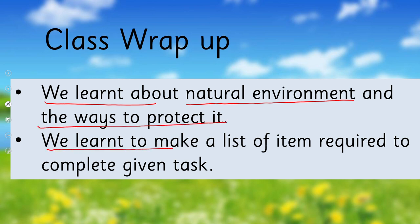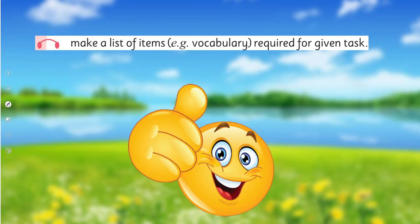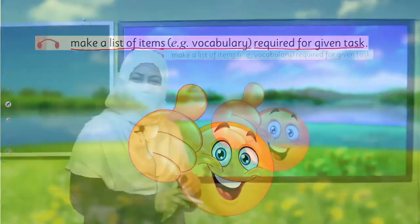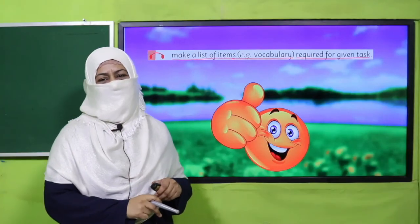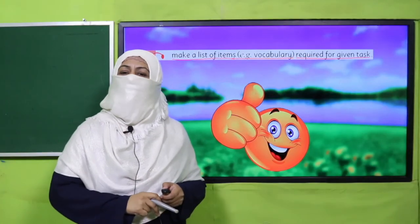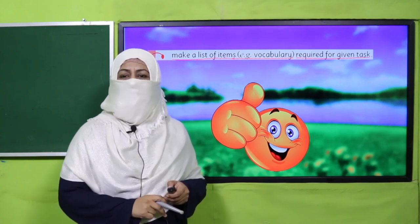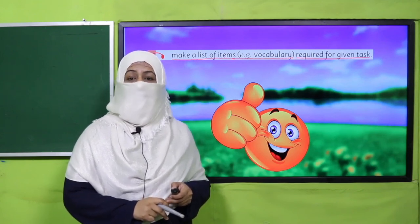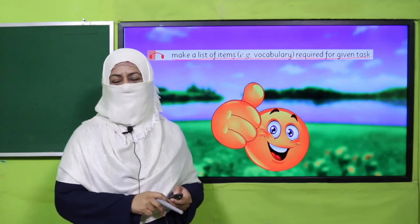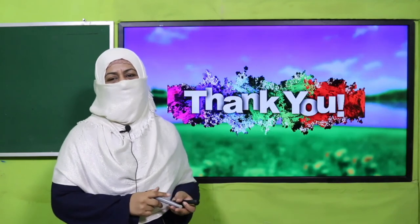So what have we learned today? We learned about natural environment and the ways to protect it. We learned to make a list of items required to complete a given task. In this way we achieved our SLO: to make a list of items required for a given task. That's it for today. Tomorrow we come again with a very interesting lesson. Till that time, keep learning, keep practicing, and take very good care of yourself. Thank you, and Allah Hafiz.